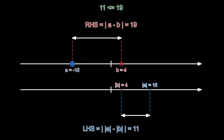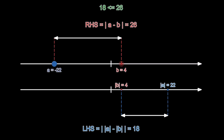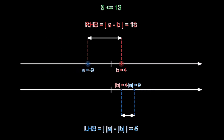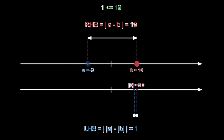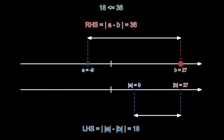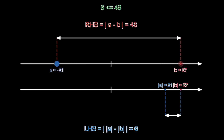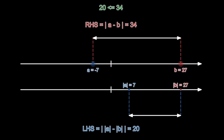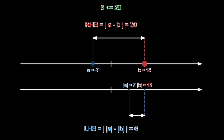And visually, if you indeed have a negative and b positive, then the distance between a and b will always be bigger than just the difference between their magnitudes.